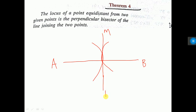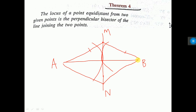MN is the locus. What is the meaning? On MN, any point you take — let's say here is a point — the distance to A and the distance to B will be equal. That means this distance equals this distance. Again, let's say I am taking one point here: this point to A and this point to B will be equal — this distance equals this distance.